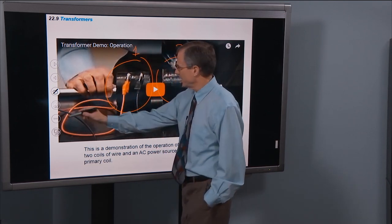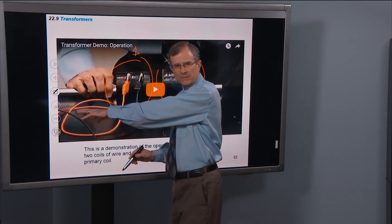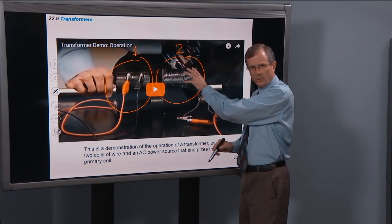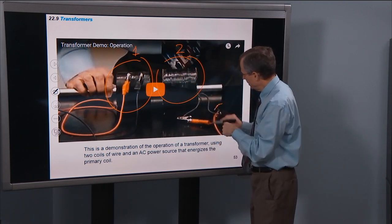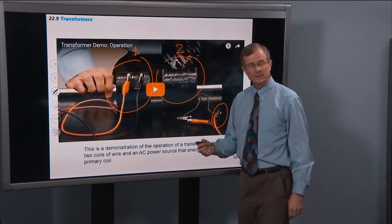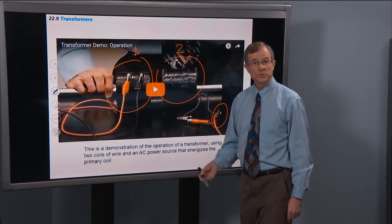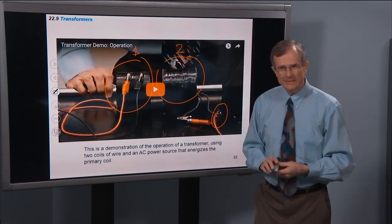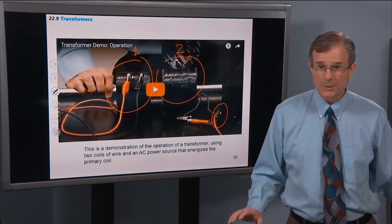This primary coil is attached to a power supply, as you'll see in the video. This secondary coil is attached to a little light emitting diode that glows green. There's no connection between this coil and this coil. And let me show you what happens.